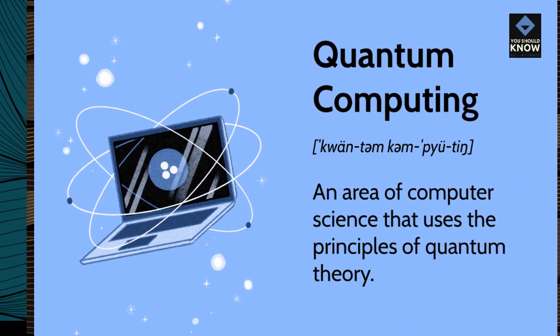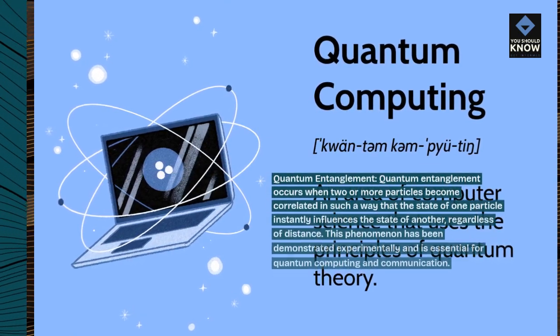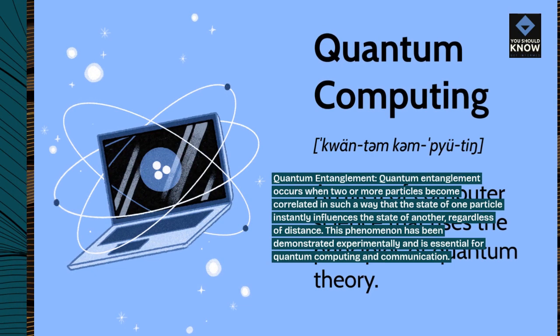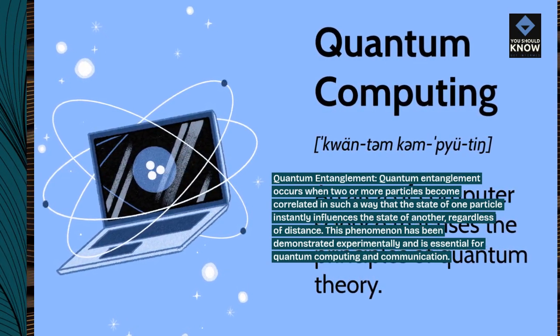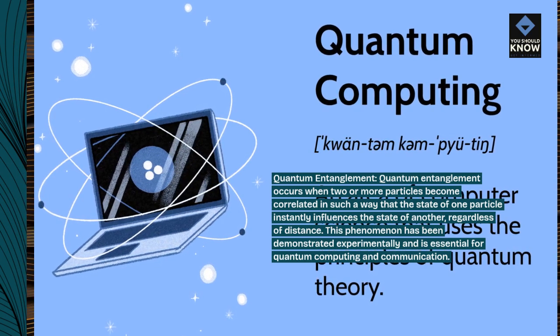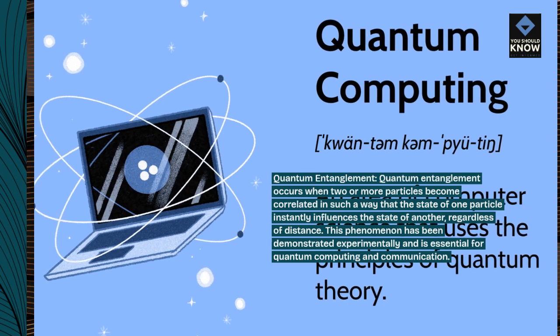Quantum entanglement occurs when two or more particles become correlated in such a way that the state of one particle instantly influences the state of another, regardless of distance. This phenomenon has been demonstrated experimentally and is essential for quantum computing and communication.